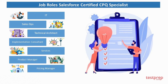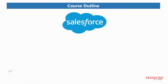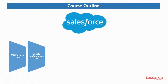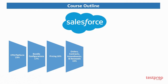The course outline is as follows: 1) CPQ Platform — 23% weightage; 2) Bundle Configurations — 17% weightage; 3) Pricing — 16% weightage; 4) Orders, Contracts, Amendments and Renewals — 15% weightage.